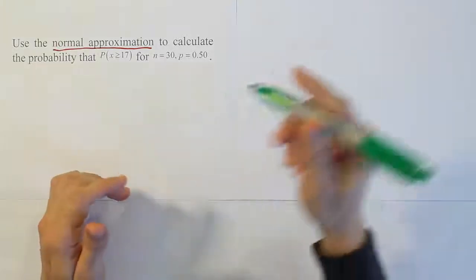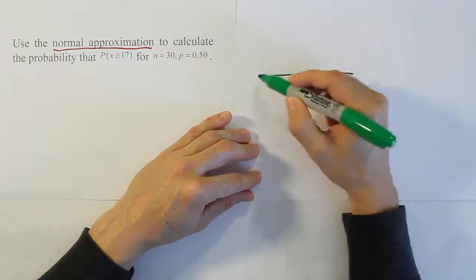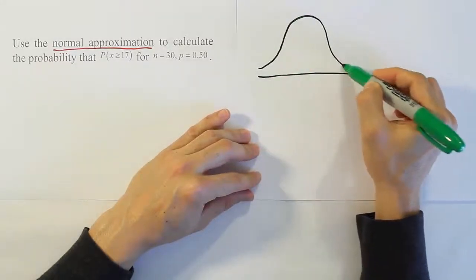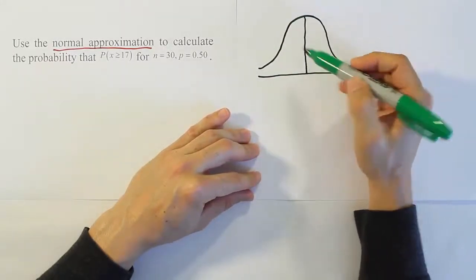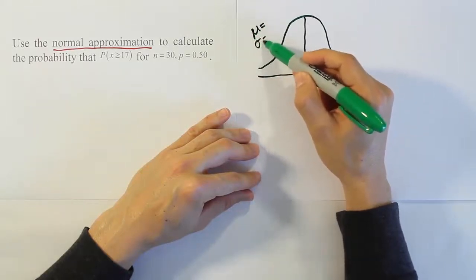Okay, so let's look at how this is done. We're going to draw a bell curve, of course, because we're using the normal approximation implies we're using a bell curve to answer the question. So we'll definitely have a bell curve. For all bell curves, we're going to need to have a mean and a standard deviation, right?